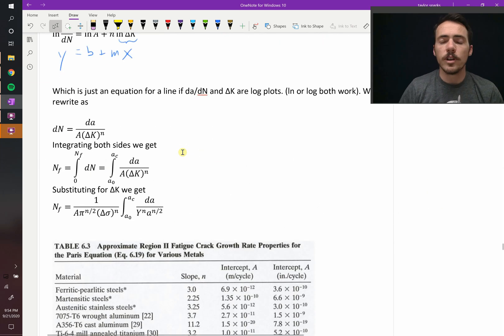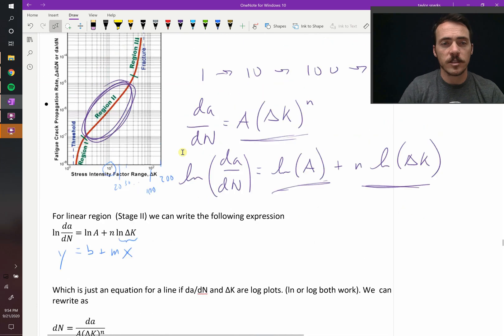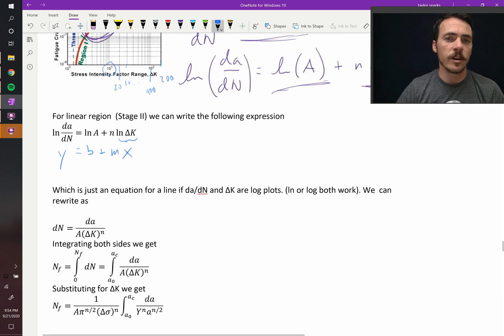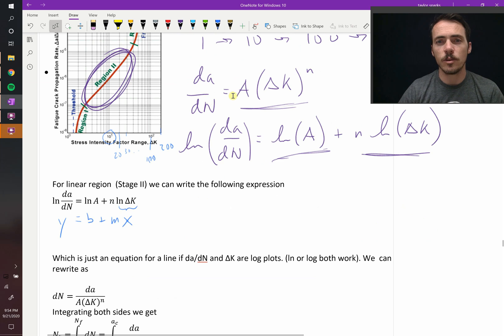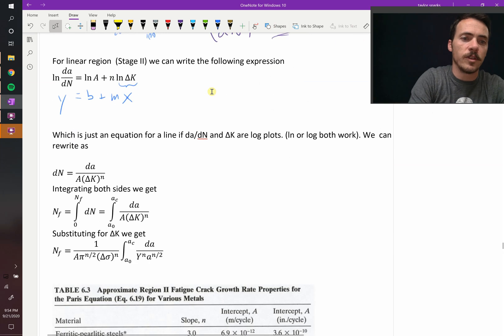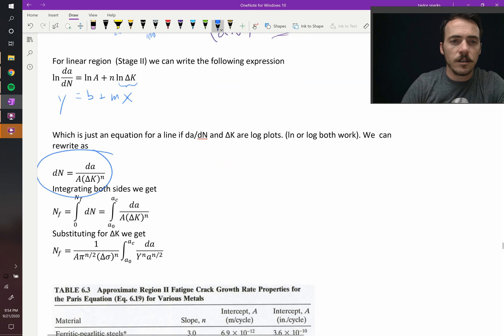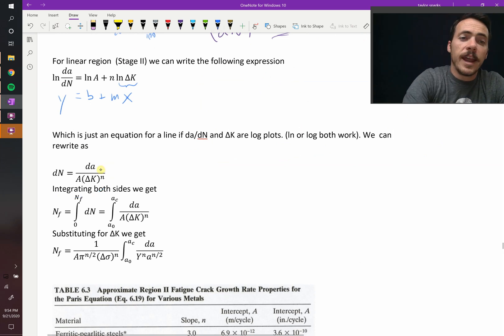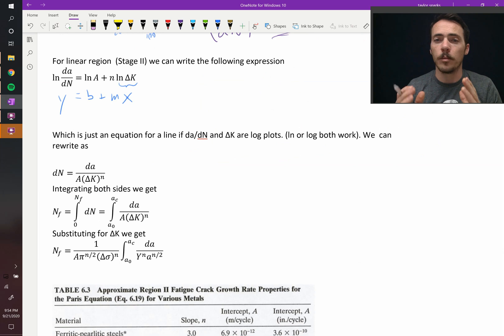Now, what do we do with this? Once we know the values of A and N, let's say you read them from a plot like this, so you know how the crack grows over time, that becomes really great because we can use it to figure out the number of cycles till failure. Here's how it works. We start out with our expression right here, dA over dN equals A delta K to the N. The first thing we're going to do is separate the variables. You have two things that are changing, the crack length and the number of cycles. Let's separate those to two different sides of the equation. We end up with this expression here, dN equals dA over A delta K to the N.